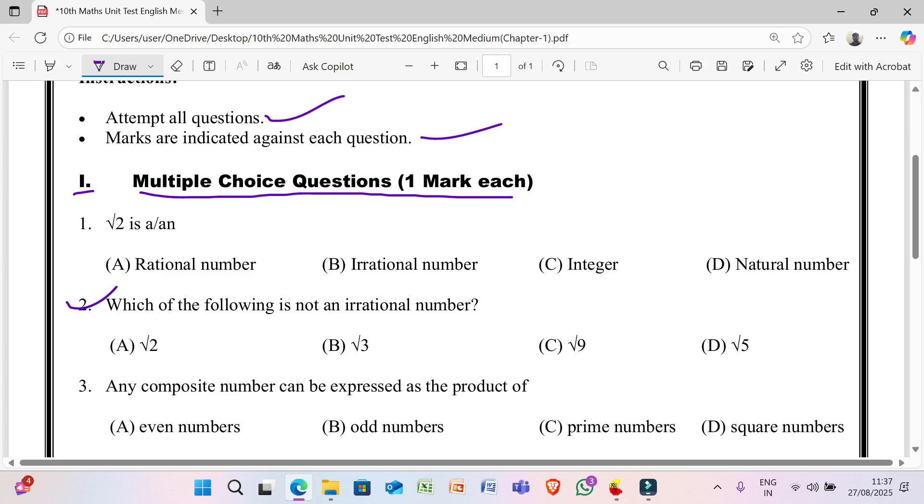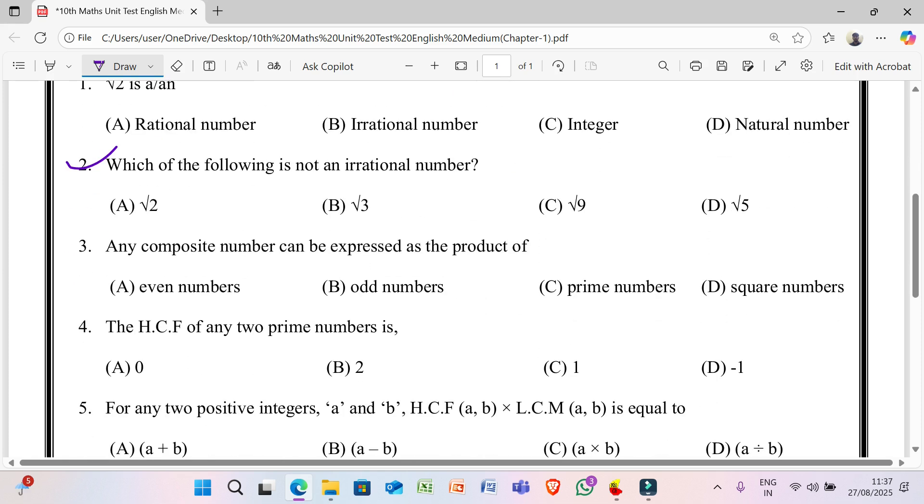D) Natural number. 2nd question: which of the following is not an irrational number? A) √2, B) √3, C) √9, D) √5